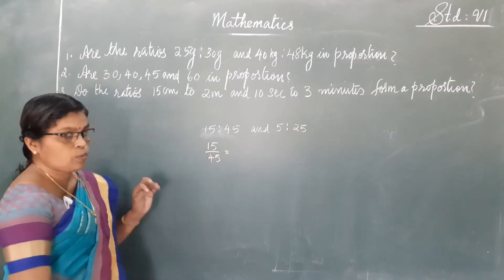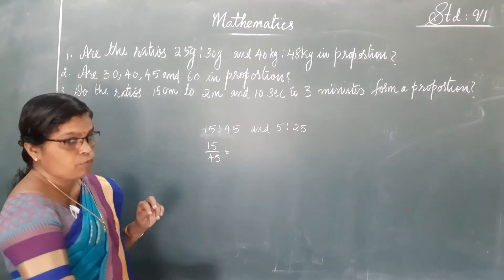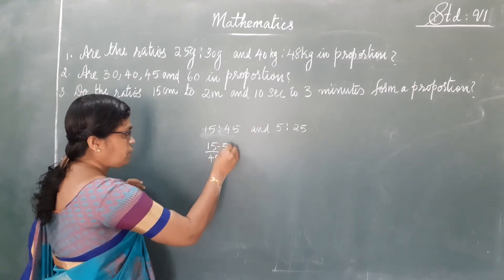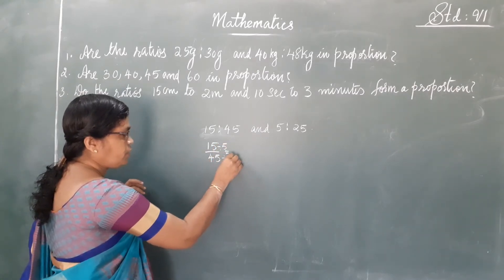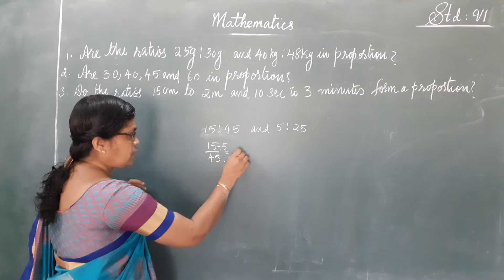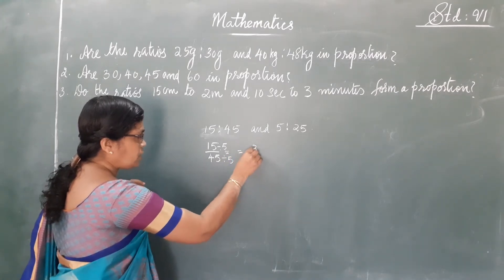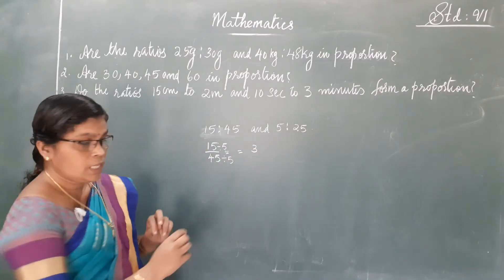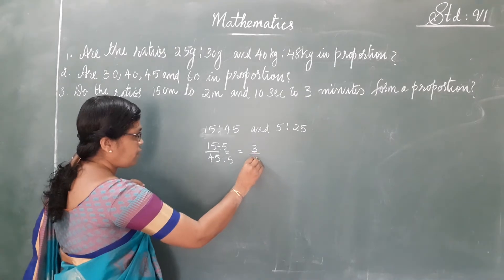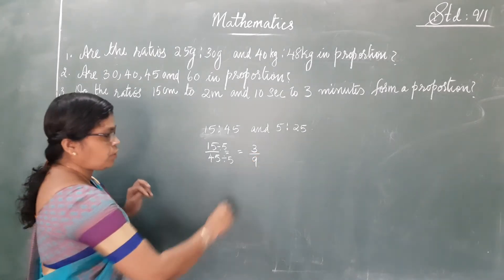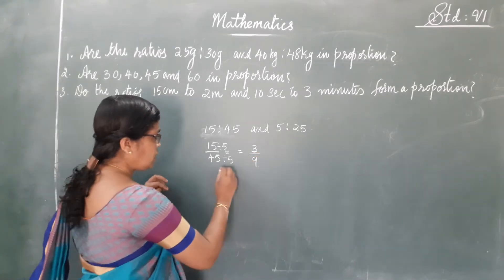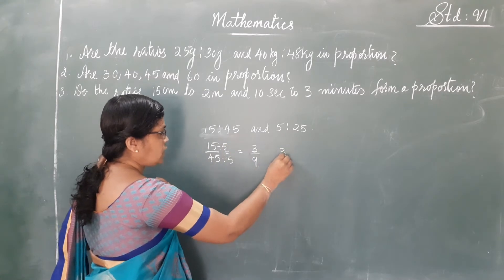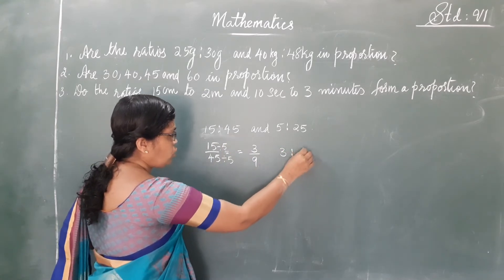15 by 45 — we can divide by 5. 15 by 5 gives 3, and 45 by 5 gives 9. So the ratio of 15 is to 45 is 3 is to 9.